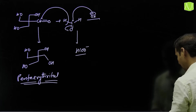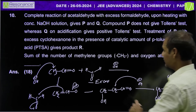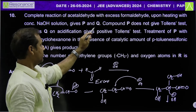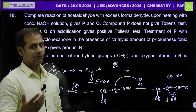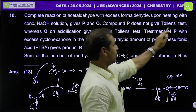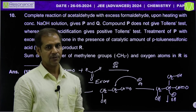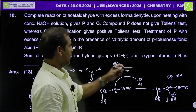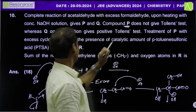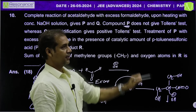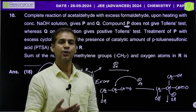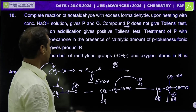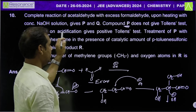So the mechanism for acetaldehyde reacting with excess formaldehyde in alkaline medium gives P and Q. P does not give Tollens' test — Tollens' test is given by aldehydes, formic acid, alpha-hydroxy ketones, hemiacetals, etc. Since P doesn't react, P is pentaerythritol. Q on acidification gives a positive Tollens' test — sodium formate acidified gives formic acid, which gives a silver mirror test. So Q is sodium formate.